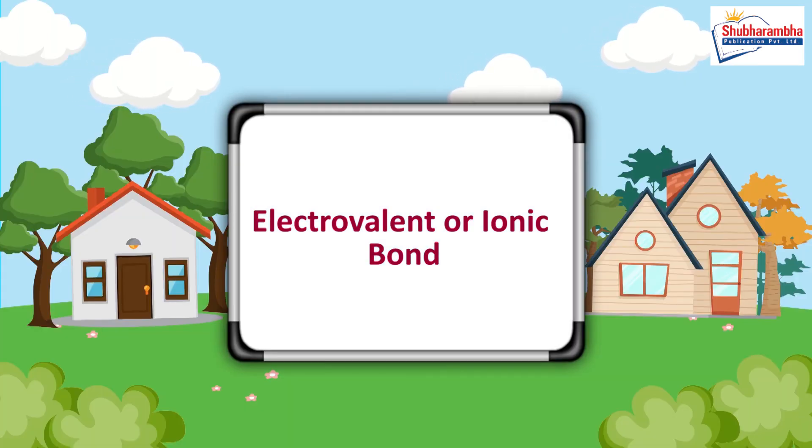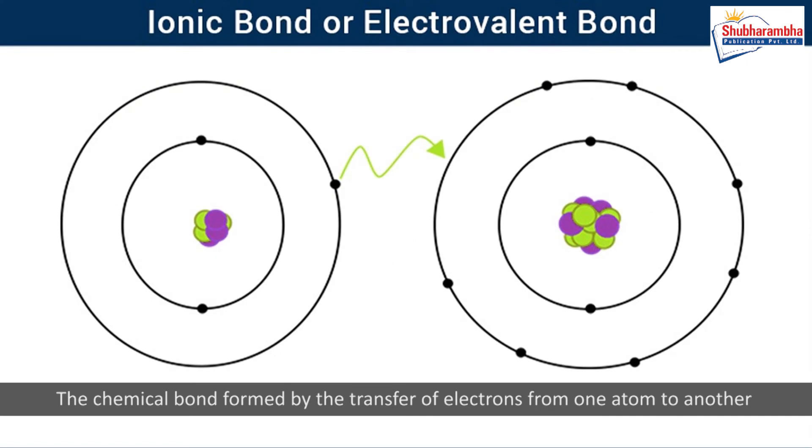Electrovalent or ionic bond. The chemical bond formed by the transfer of electrons from one atom to another is known as an electrovalent bond or ionic bond. The transfer of electrons takes place in such a way that the ions formed have the stable electronic configuration of an inert gas.